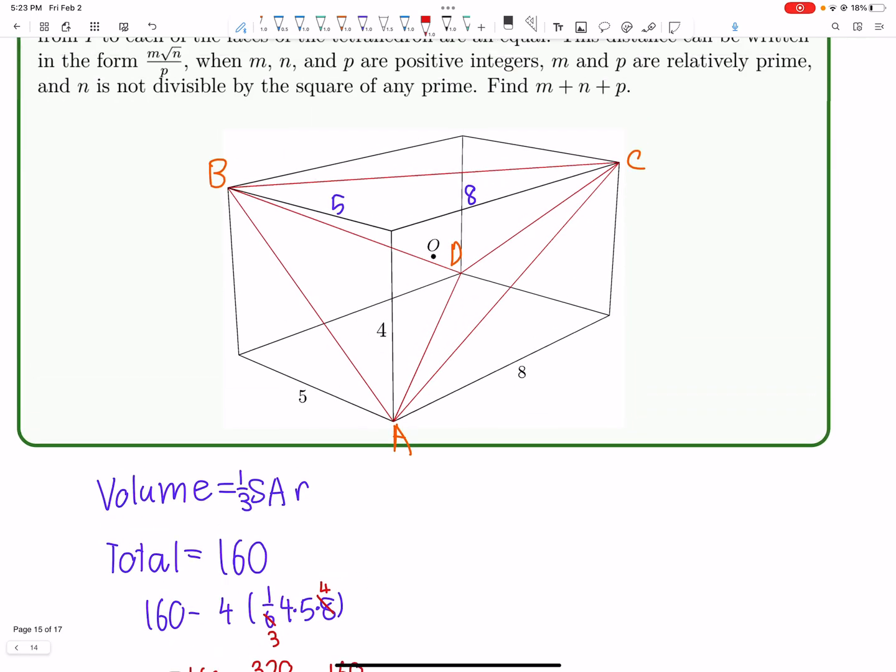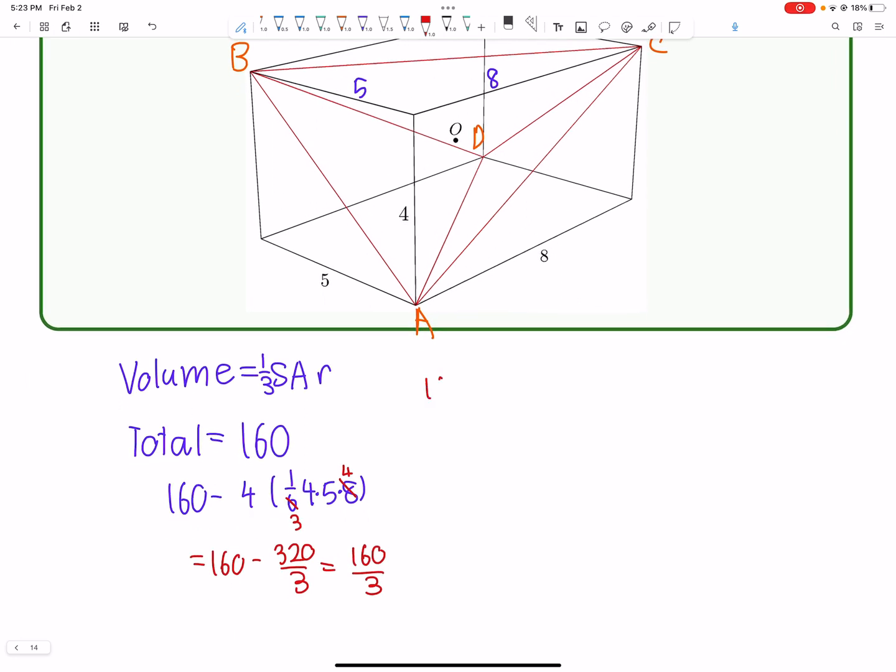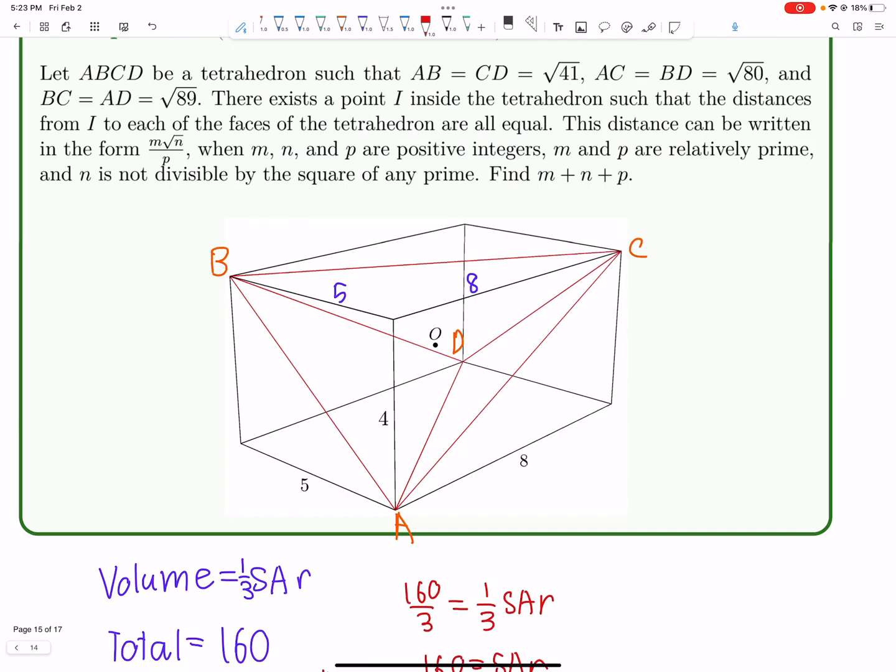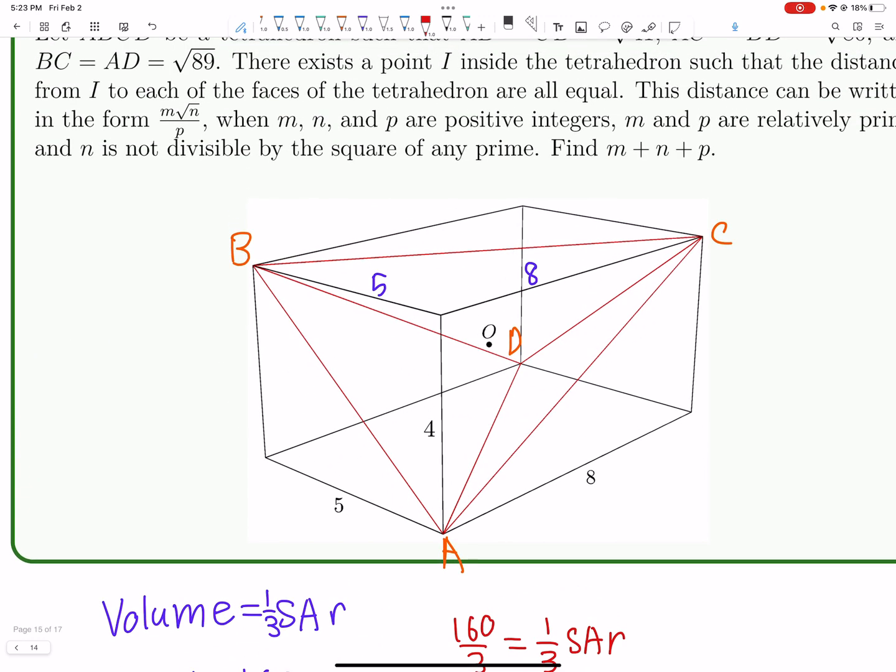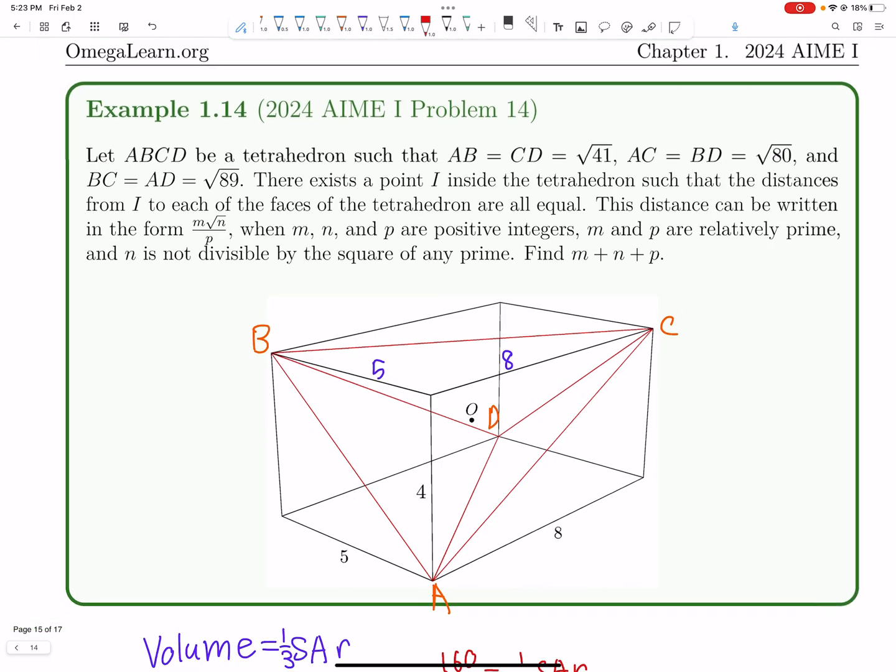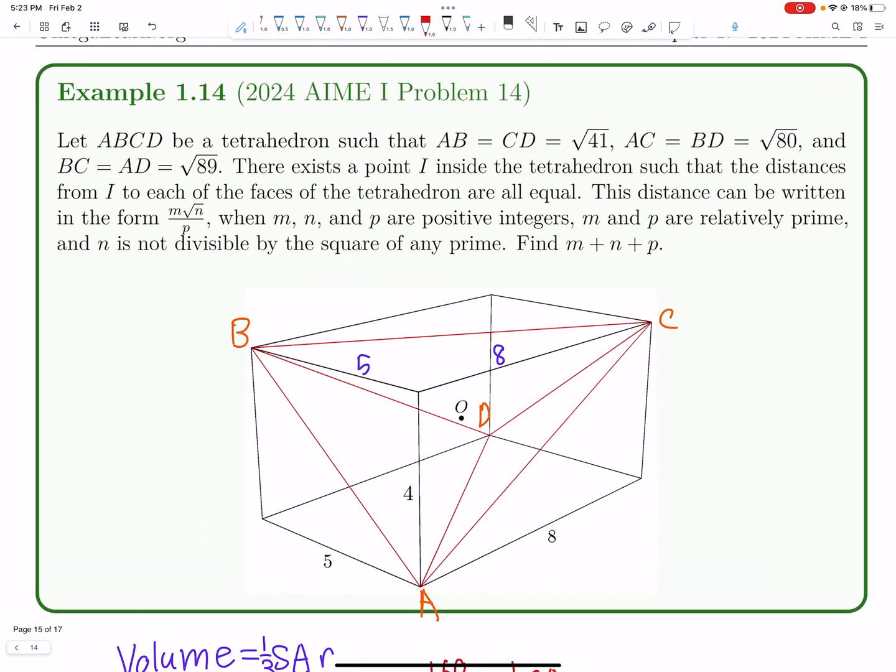So now that's, now we just use volume. So 160 over three equals one third surface area R. And then 160 equals surface area R. So now the question is, what is the surface area? So another thing that makes this problem quite cool is that all the faces have the exact same area. So the surface area is also quite nice.